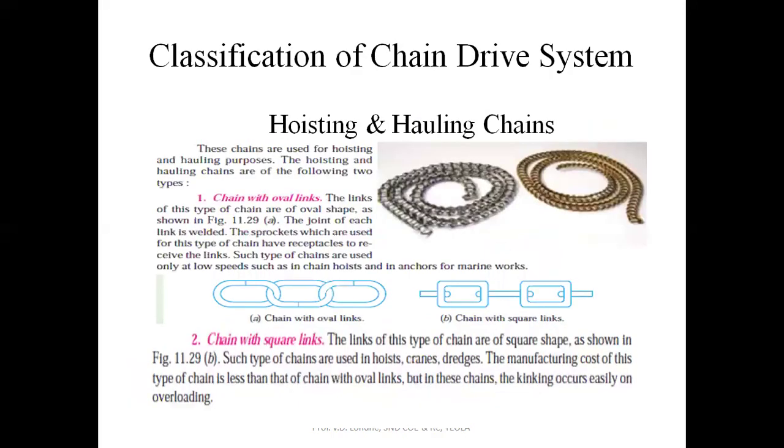Classification of chain drive systems: First classification is hoisting and hauling chains. These chains are categorized into two parts: one is chain with oval links, another is chain with square links. In chains with oval links, the joint of each link has been welded.